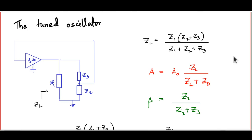Today we are going to study a class of oscillators that are very important, especially for high-frequency work. They are called tuned oscillators. In a tuned oscillator, you have an amplifier with its open-loop gain A0 and an output impedance of zero, connected to a so-called tank circuit with three impedances Z1, Z2, and Z3. The nature of these impedances will be identified in the course of this discussion.